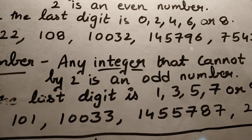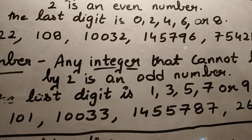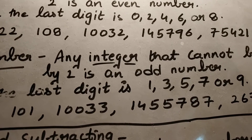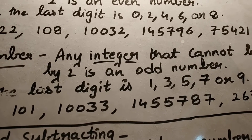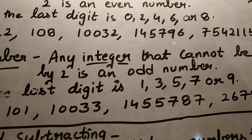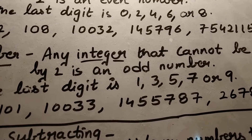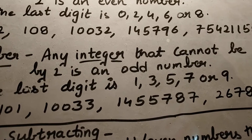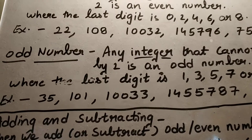All numbers where the last digit is zero, two, four, six, or eight are even numbers. Please remember this. It doesn't matter how large the number is — if the last digit is zero, two, four, six, or eight, it is an even number.